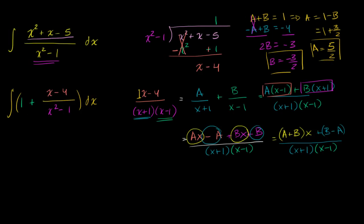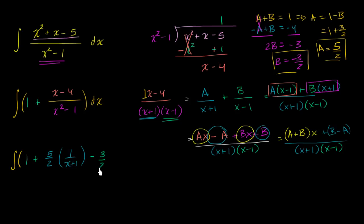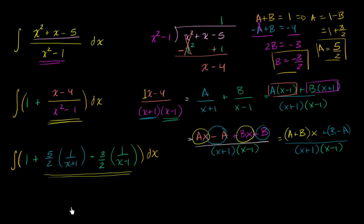With a equals five halves and b equals negative three halves, we can rewrite the whole integral as the integral of one plus five halves times one over x plus one, minus three halves times one over x minus one, all dx. We took the original expression and expanded it via partial fractions into these two simpler terms.